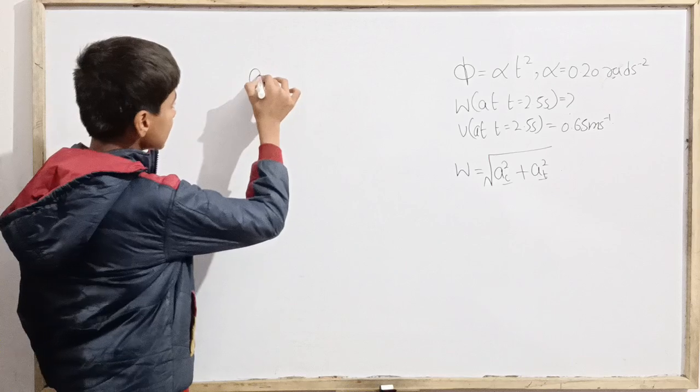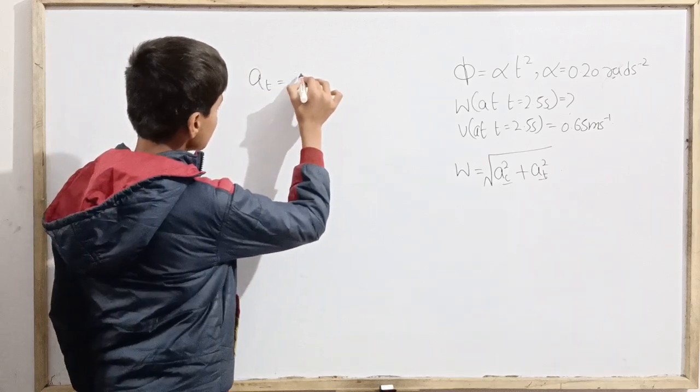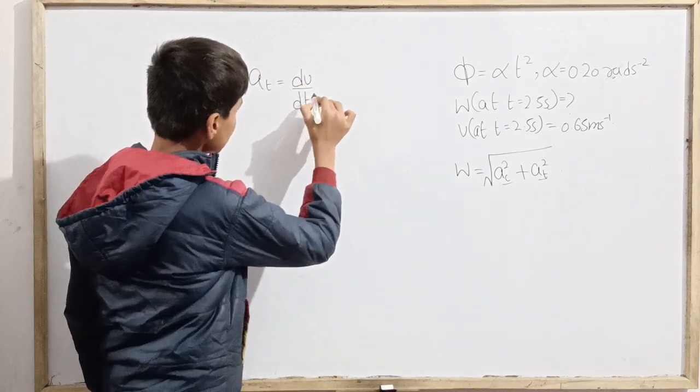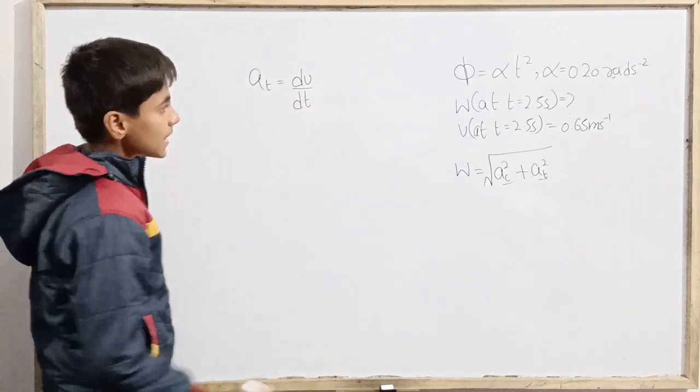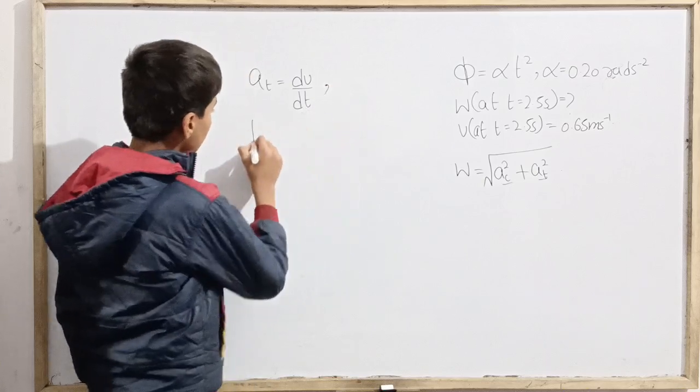So we know how to start off. We know that tangential acceleration is d of the t, dv/dt, its derivative. Linear speed is the same thing.